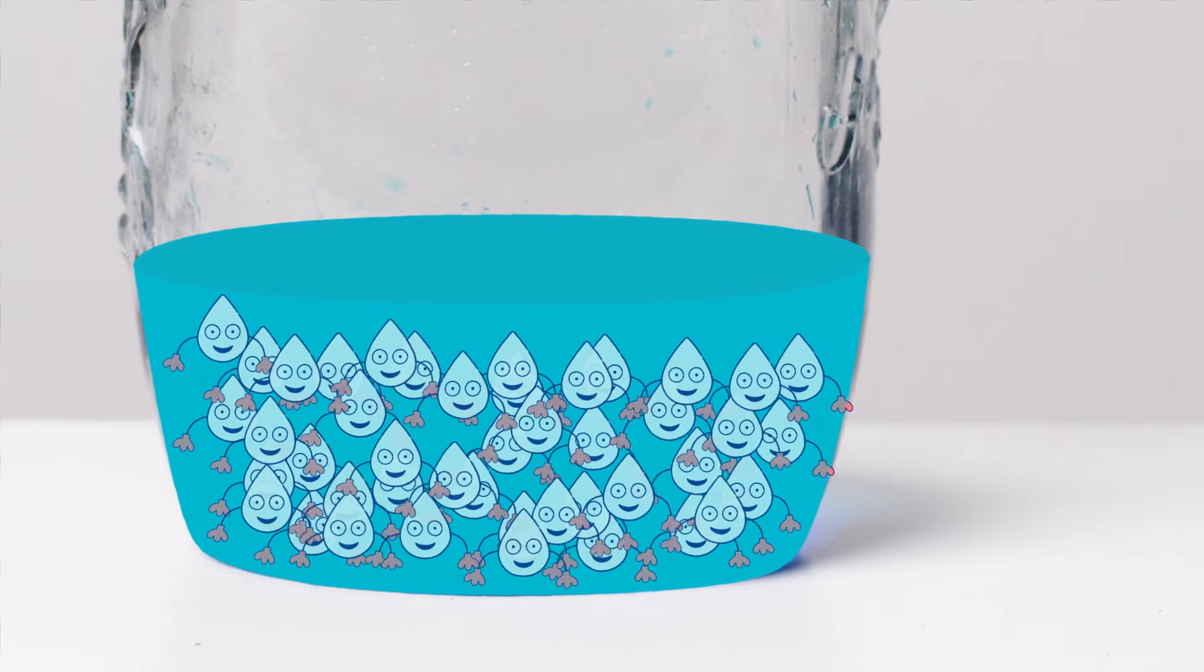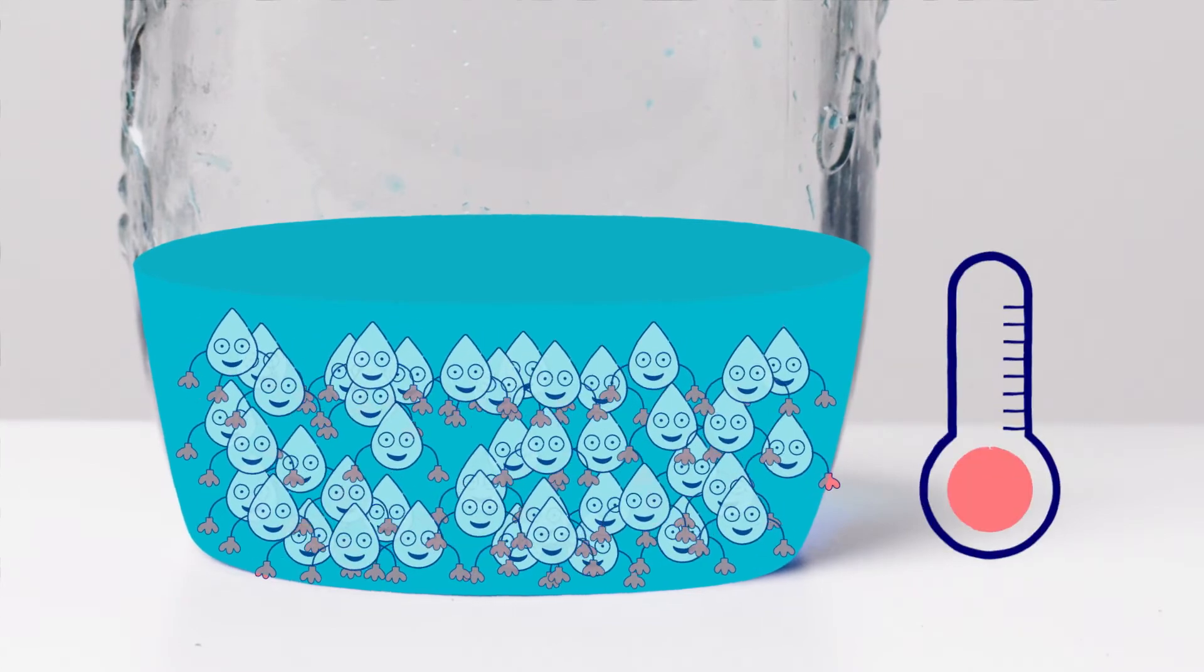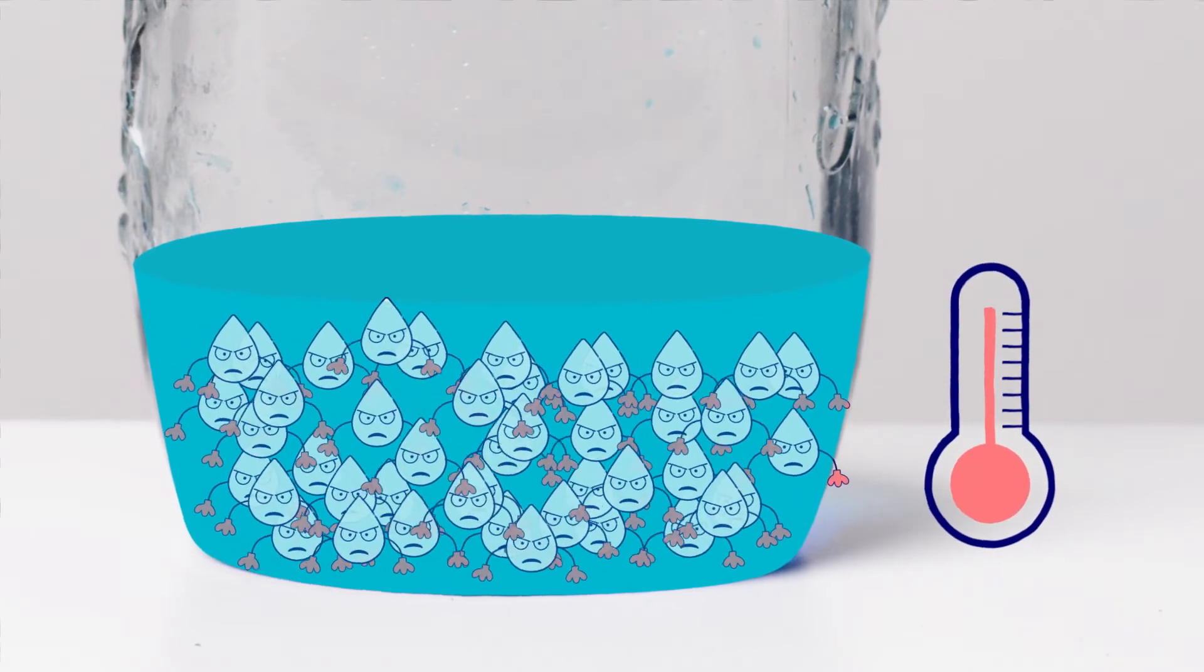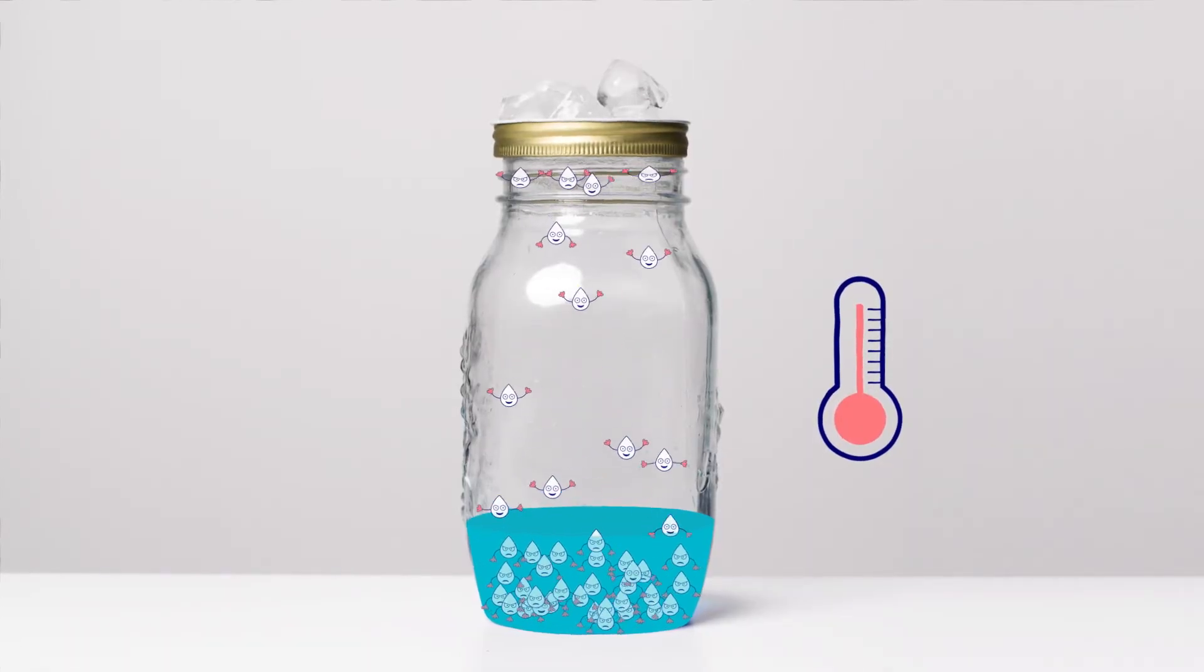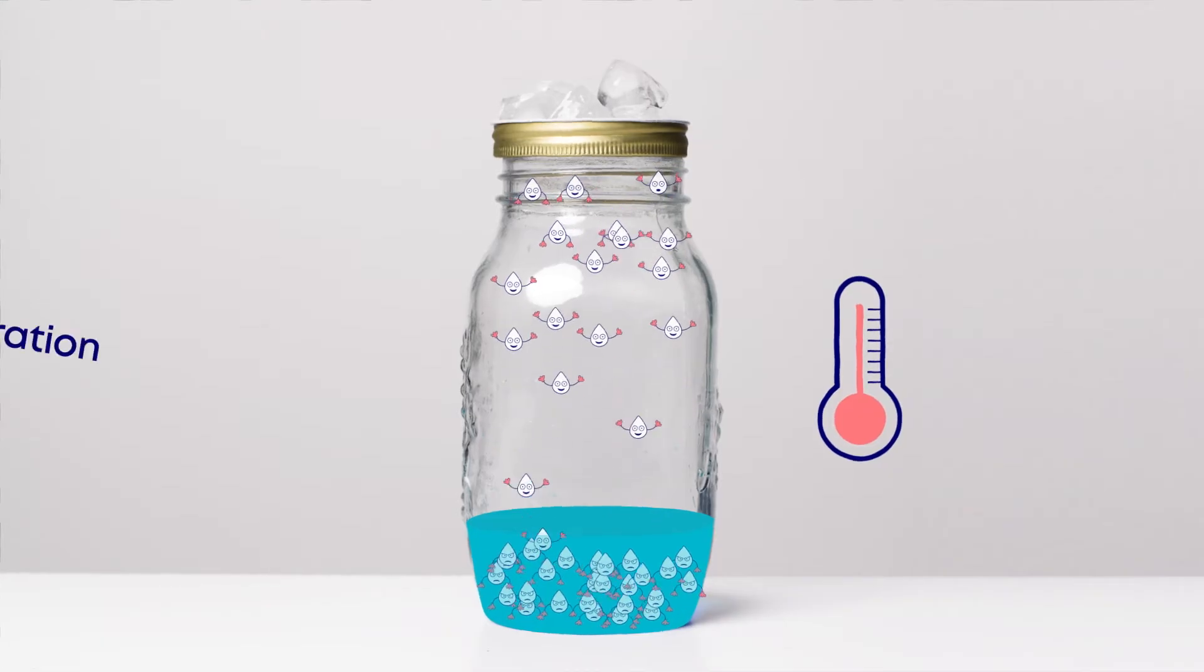Water is made up of squillions of water molecules. When warm they don't like to be close together. They move apart changing from liquid to gas and rise into the atmosphere as water vapor. This is called evaporation.